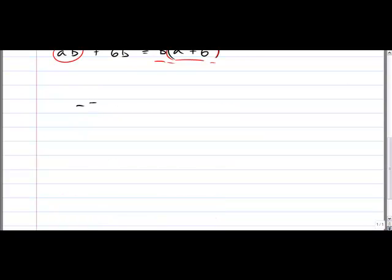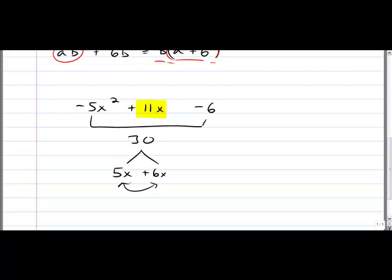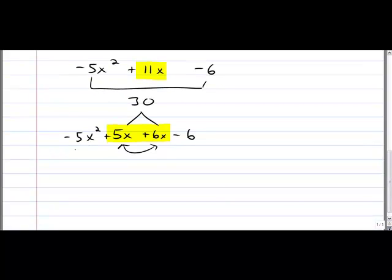Negative 5x squared plus 11x minus 6. Link these two up. Multiply them together, you get 30. What multiplies to 30 and adds to 11? 5 and 6. So I'll put my 5x plus 6x. You could swap places here, it won't matter. Alright, so I just split the middle term. I'm going to go ahead and group the first two together. I'll group the second two.